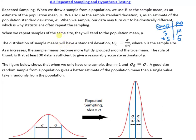So when we repeat samples, we want to repeat them of the same size. And the more samples that we repeat and that we take and that we test, the more our sample mean X bar is going to tend to the population mean mu.